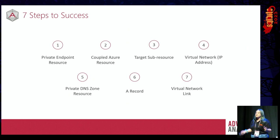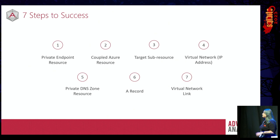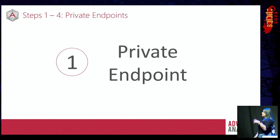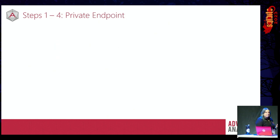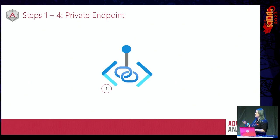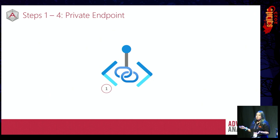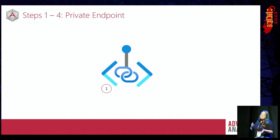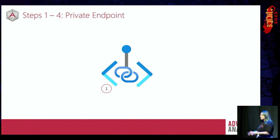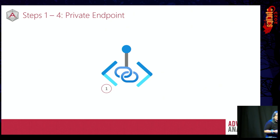Starting off with step one, a private endpoint. A private endpoint is actually a resource in its own right. If you want to create a private endpoint for a storage account — a blob storage account for example — that's not a setting you go and configure on the storage account. It is a whole separate Azure resource that you need to deploy. That's the first thing you need to have an awareness of.